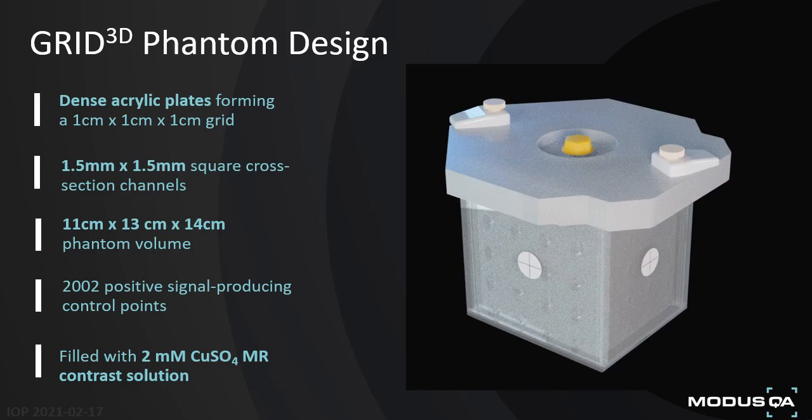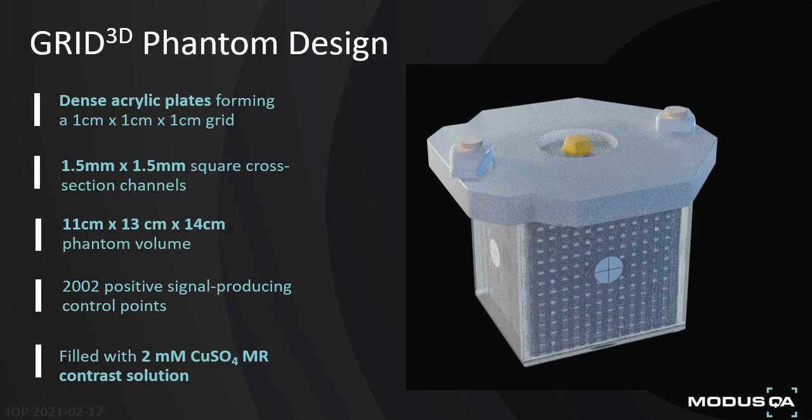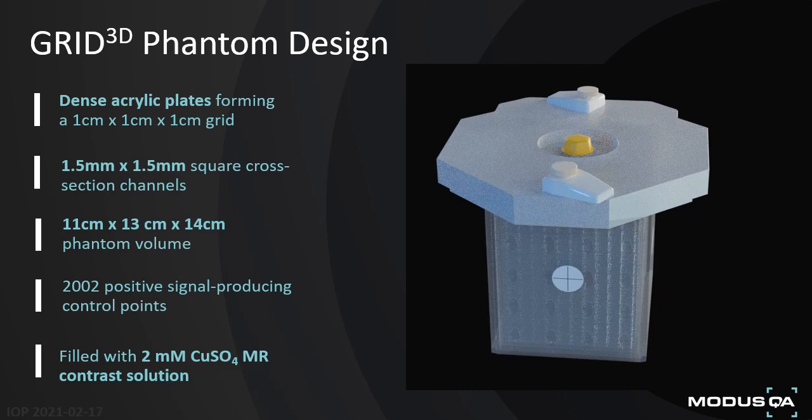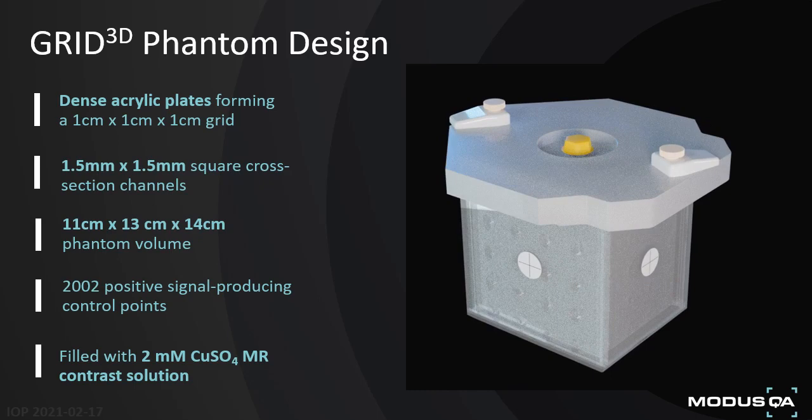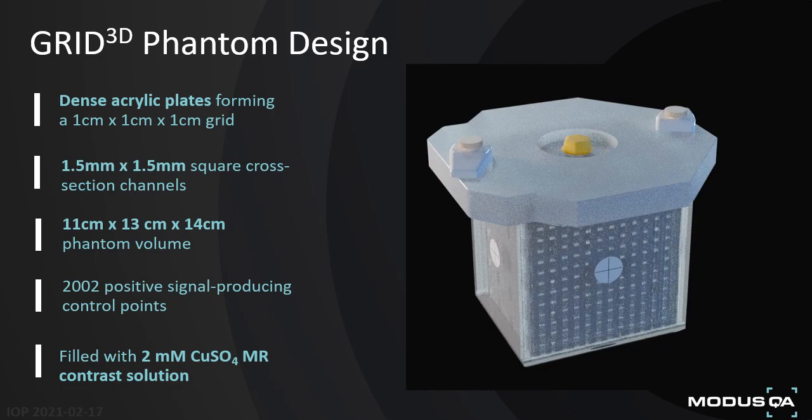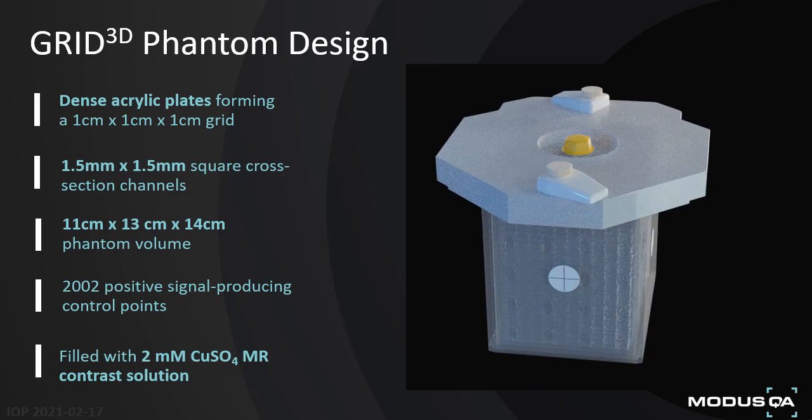As much of this phantom is hollow — including the channels, chambers, and most importantly the control points themselves — the phantom is filled with a 2 micromolar solution of degassed deionized copper sulfate aqueous solution. This is an MRI contrast agent, and therefore upon imaging the phantom, a positive signal can be yielded at each of these control points, giving positive information that correlates to IEC standards.